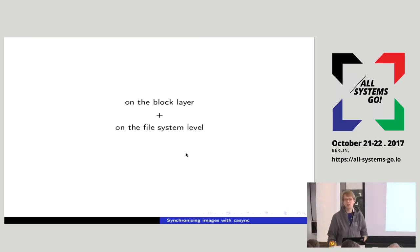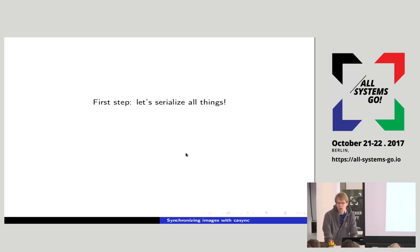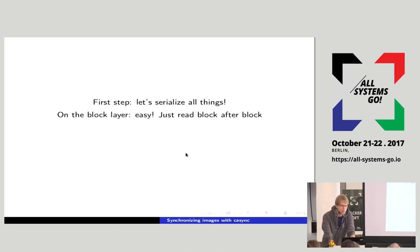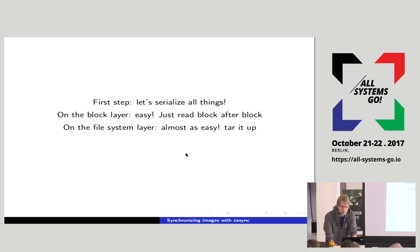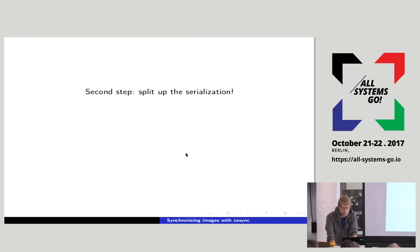Let's have a technical look at what CISync does when you upload or download an image. The first step of uploading is we serialize everything. On the block layer, that's easy — we just read the sectors of the disk one after the other. On the file system, it's almost as easy: effectively you tar it up — go through all the files and directories, put them in a specific order, store some metadata, and turn it into one big long stream.